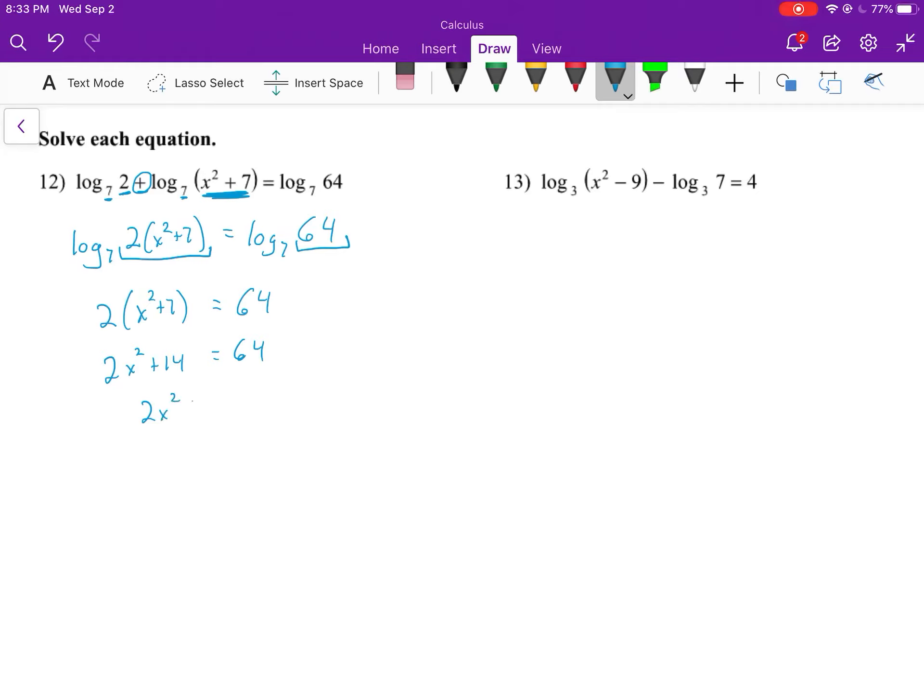64 minus 14 is 50. Divide both sides by 2, we get x² = 25. Taking the square root of both sides - don't forget plus or minus - so x = ±5.